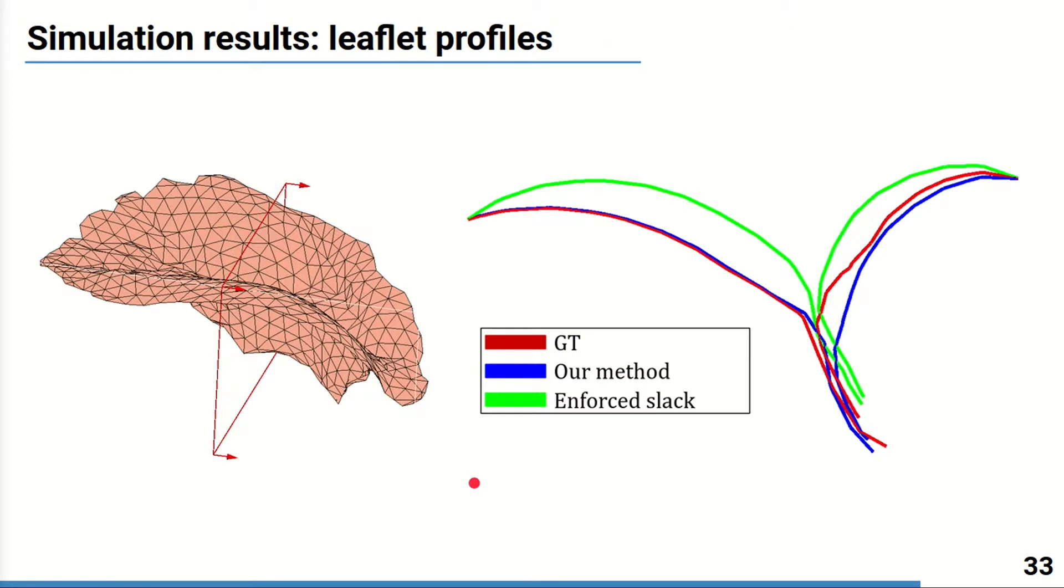Then the outcomes for these three configurations were compared by the leaflet profiles in the cut plane shown here on the left. As it can be seen the profiles for the ground truth and our method are similar. In both cases the valve remains sealed. However for the configuration with enforced slack a more important bulging is observed.